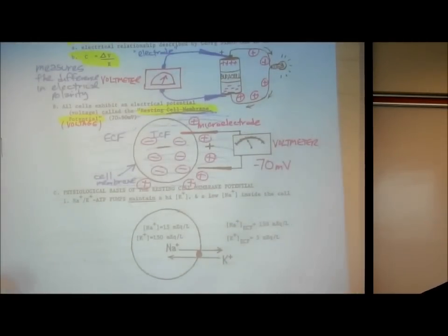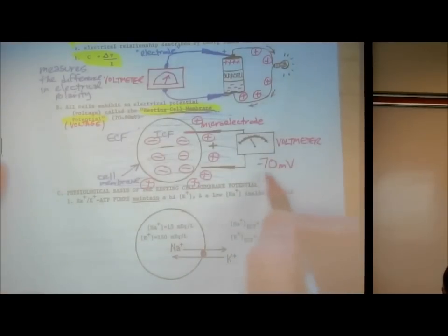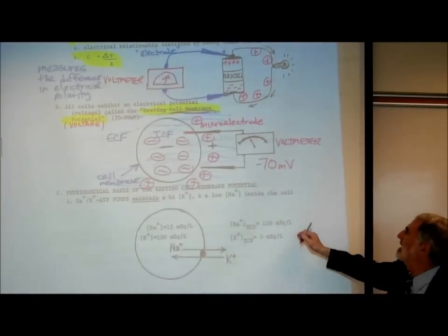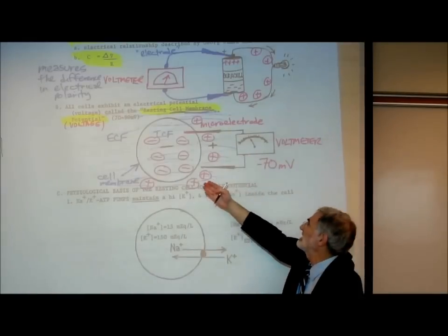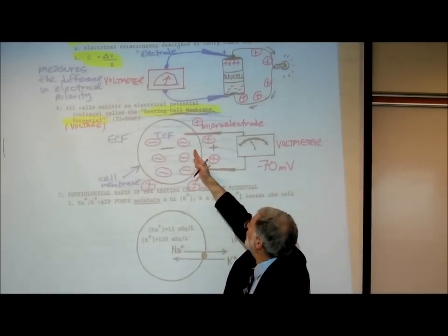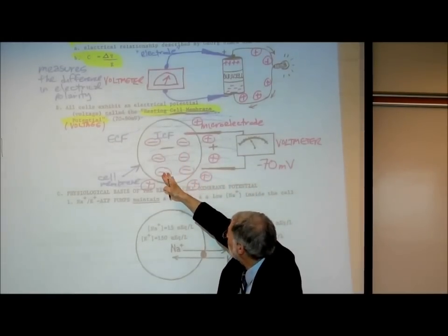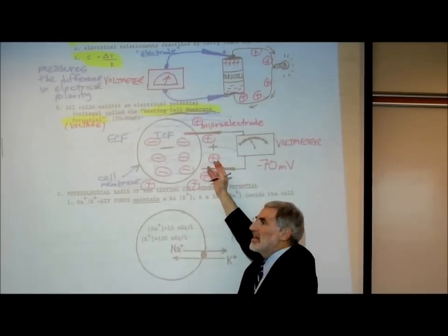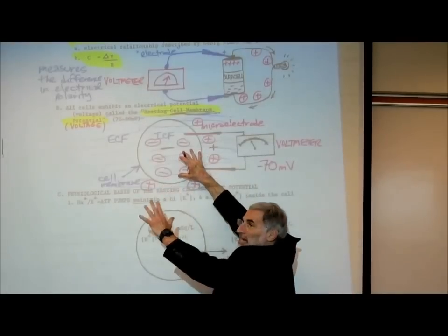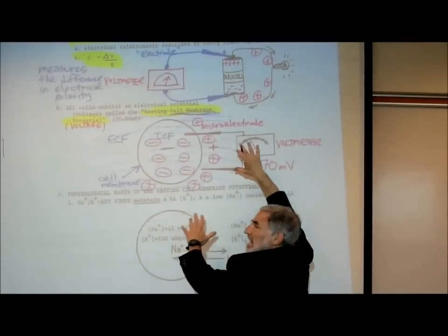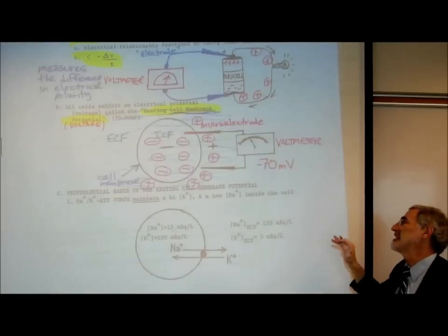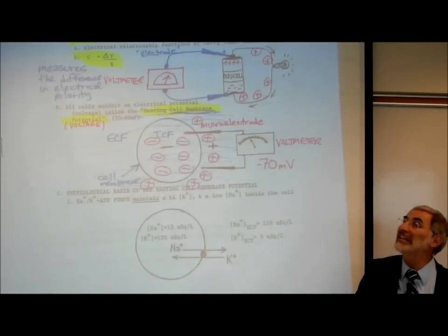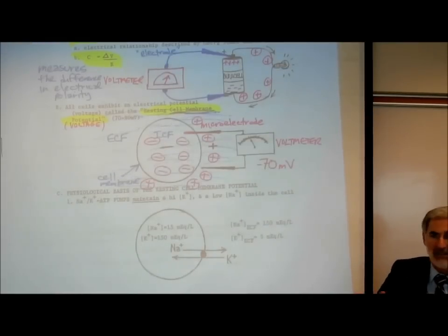They usually write it as minus 70 because they're indicating that the inside of the cell is polarized negative and the outside is positive. Since it's the cell we're interested in, they write minus 70, meaning the inside is 70 millivolts more negatively polarized than the outside.